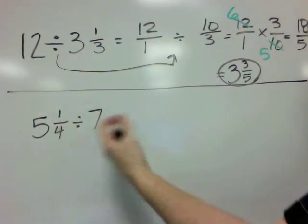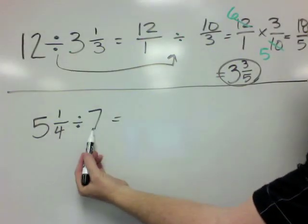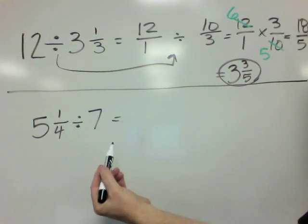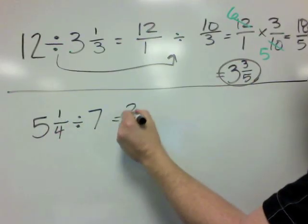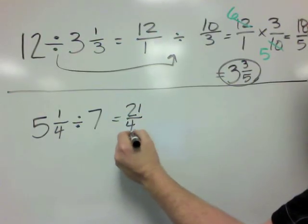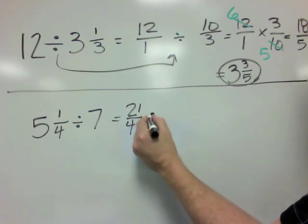Same process though. We first begin by turning both of these numbers into an improper fraction. 5 times 4 is 20, plus 1 is 21 over 4, divided by—this stays as divided by right now—and the 7 becomes 7 over 1.